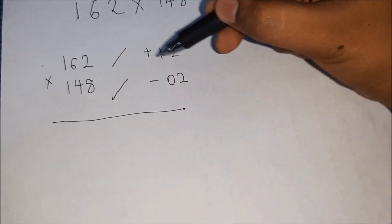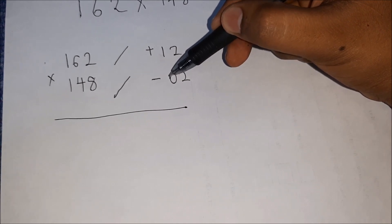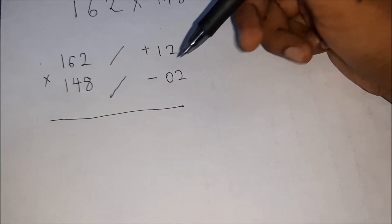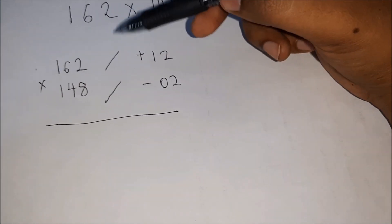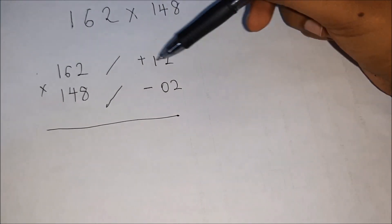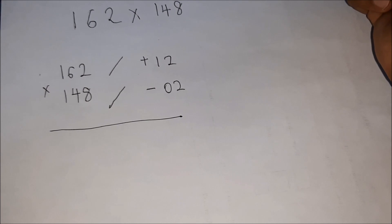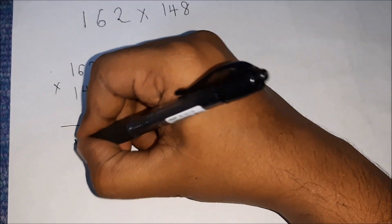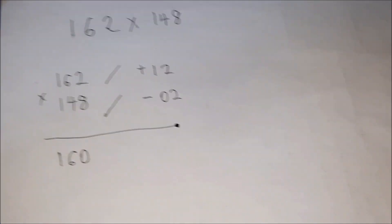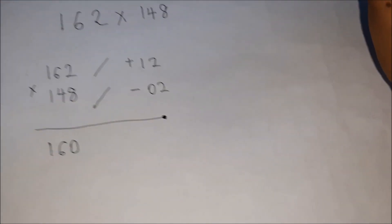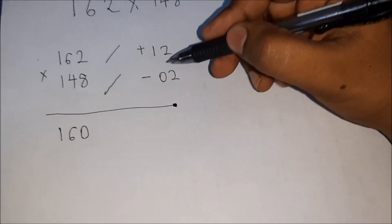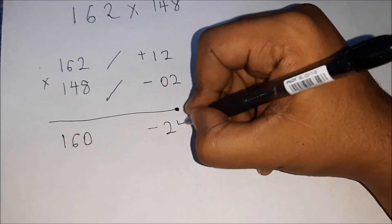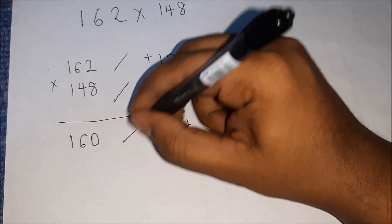So 162 added with this value, which is negative 2, would give us 160. Or 148 plus 12 would give us 160, either way. It's the cross sum, so we put 160 here on the left-hand side. And 12 times negative 2 would give us negative 24.